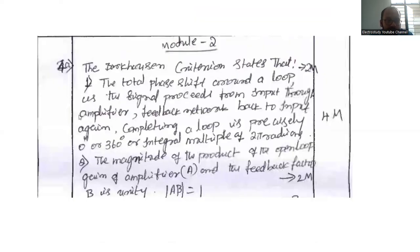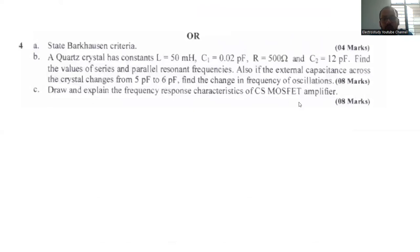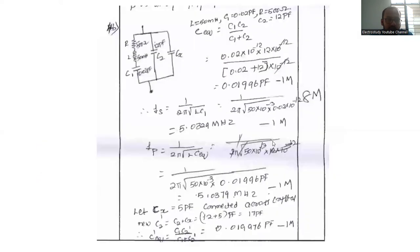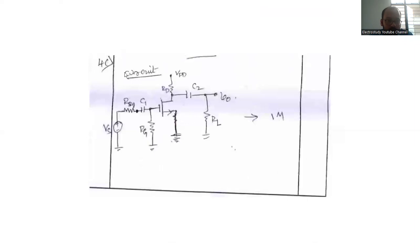Then draw and explain the frequency response characteristics of a common source MOSFET amplifier. For C, subcircuit diagram is already available here. Please refer this particular subcircuit diagram. Remember the subcircuit diagram mentioned with the drain source gate, then with the biasing resistors. All the things you have to mention accordingly.